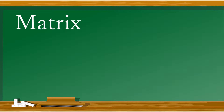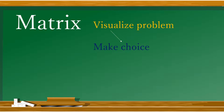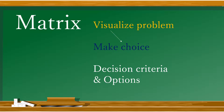A matrix is a tool used to visualize complex problems and help you make a choice. There are only two elements that are needed for a matrix: decision criteria, or what factors you are analyzing, and any number of choices.